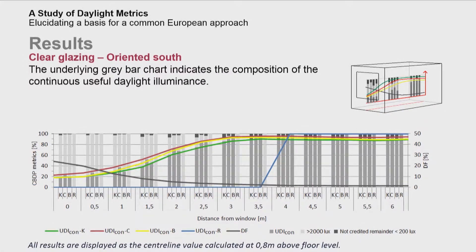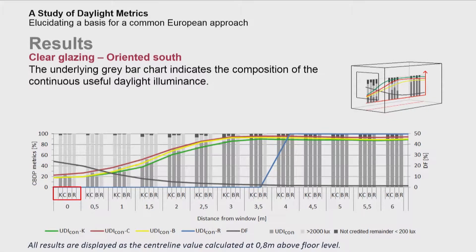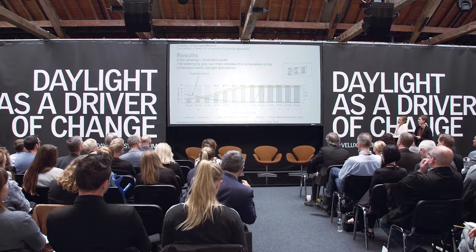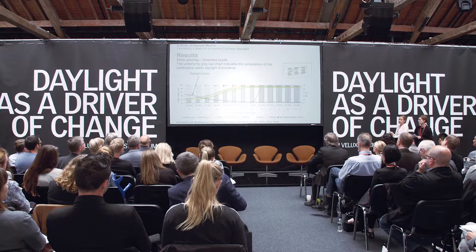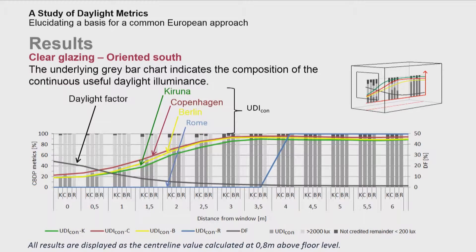The sensitivity analysis is based on a standard room where we compare different values along the center line of the room for all different parameters for each metric. In the graph below, we are looking at the different locations. As expected, the daylight factor didn't show any variation according to the different locations. But when looking at the useful daylight illuminance, we can see that there are different variations according to the different locations.